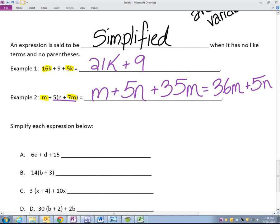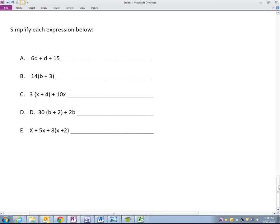Now we have 36 monkeys. Shh, quiet, please. We have 36 monkeys and five noses. Okay? It does sound silly, but it just helps you remember that you can't have a combination of a nose monkey.